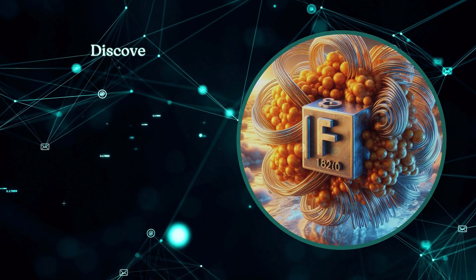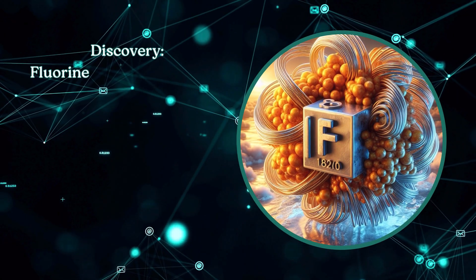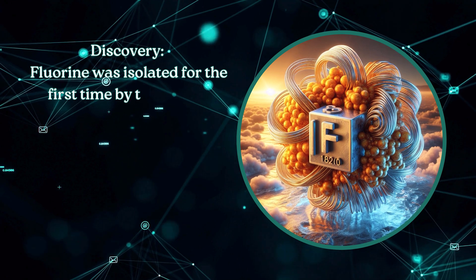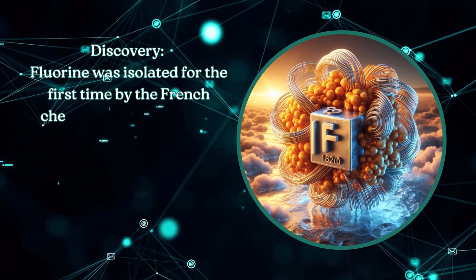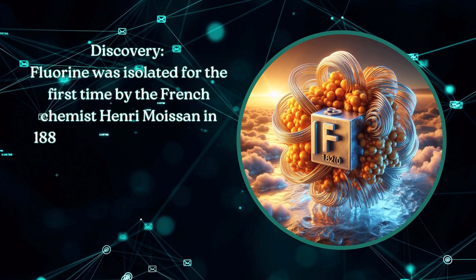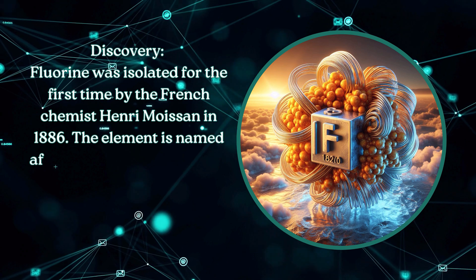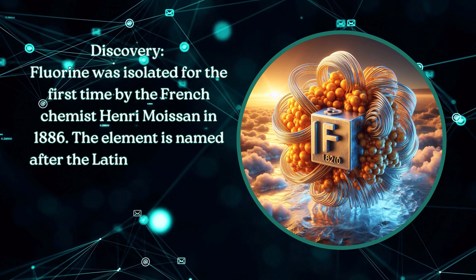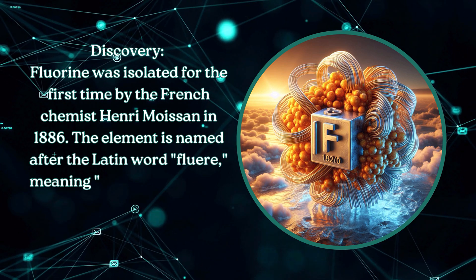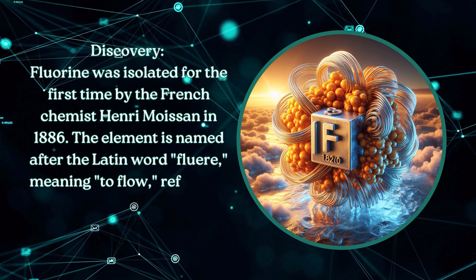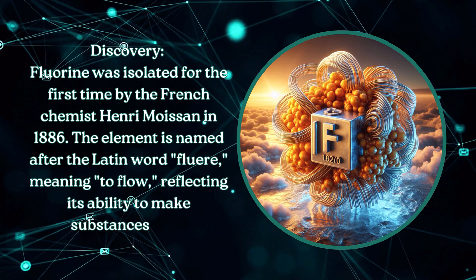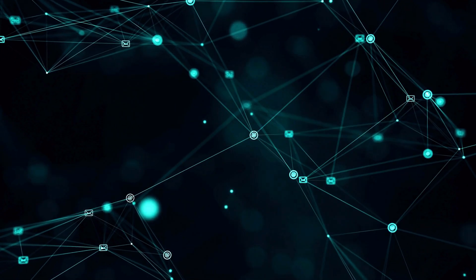Fluorine was isolated for the first time by the French chemist Henri Moissan in 1886. The element is named after the Latin word fluere, meaning to flow, reflecting its ability to make substances flow.